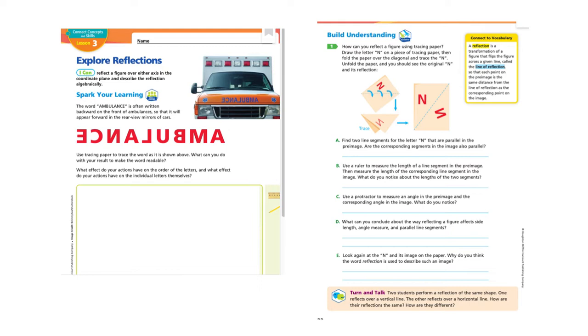Spark Your Learning. The word ambulance is often written backward on the front of ambulances so that it will appear forward in the rearview mirror of cars. So they have the word ambulance written here backwards. Use tracing paper to trace the word as it is shown above. What can you do with your result to make the word readable?